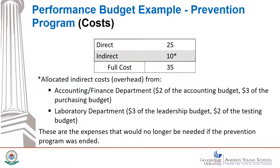These allocated overhead amounts could be determined by a number of methods. For the accounting department, the number of checks written on behalf of the prevention program as a share of all written checks could be used to allocate a share of the accounting department's budget to the prevention program. Maybe part of the testing program's budget in terms of staff time is used to promote prevention, thereby making it appropriate to allocate $2 to the prevention program. If the prevention program was no longer part of the organization's mission, then theoretically that $2 would no longer be needed and could be eliminated.